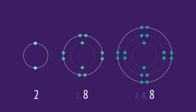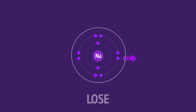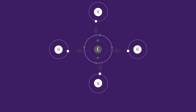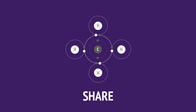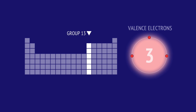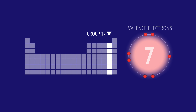These noble gases don't tend to form bonds because they already have full outer shells. Other atoms try to achieve one of these stable electron arrangements by either losing electrons, gaining electrons, or sharing electrons. What they do depends on the number of valence electrons the atoms have, which is related to their group number in the periodic table. Elements with the same number of valence electrons are in the same group, and so they form bonds in a similar way.